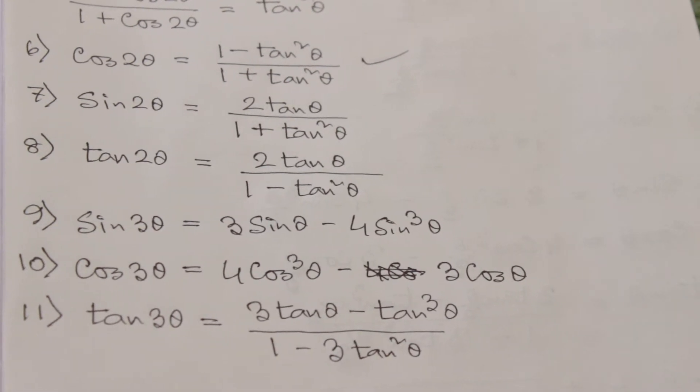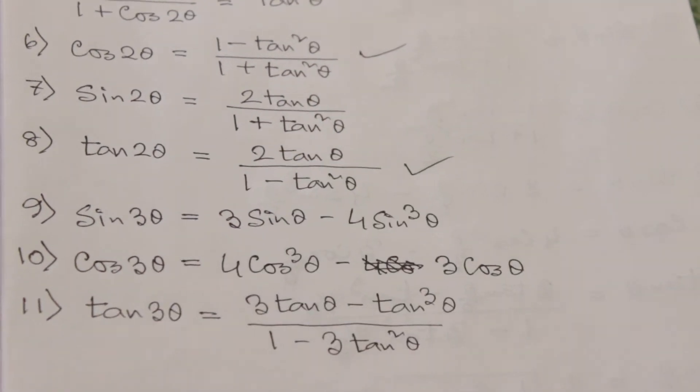Tan 2θ is equal to 2 tan θ divided by (1 minus tan²θ), which is formula number 8.